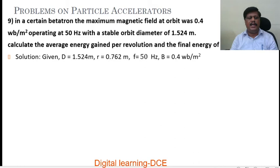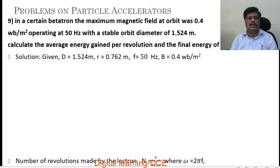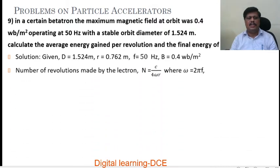Let us discuss problem number 9. In a certain betatron, the maximum magnetic field at orbit was 0.4 Weber per meter square, operating at 50 Hz, with a stable orbit diameter of 1.524 m. Calculate the average energy gained per revolution and the final energy of the electron. Given diameter 1.524 m, radius r equals d by 2, so r equals 0.762 m. Frequency is 50 Hz.